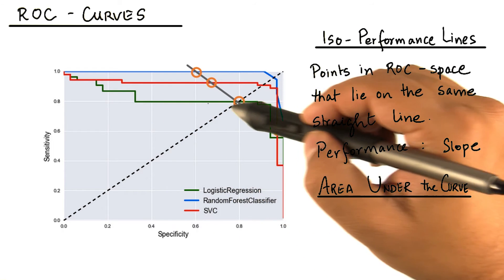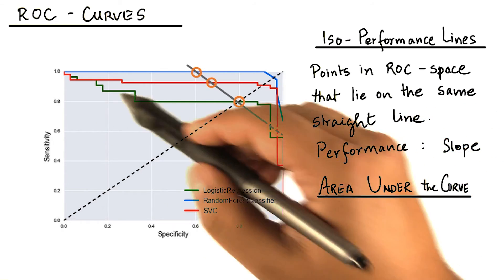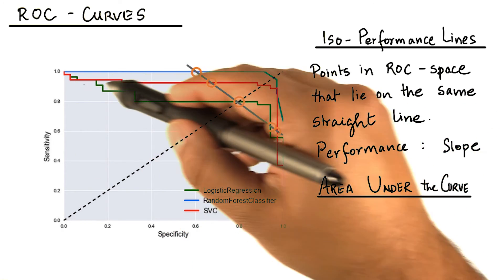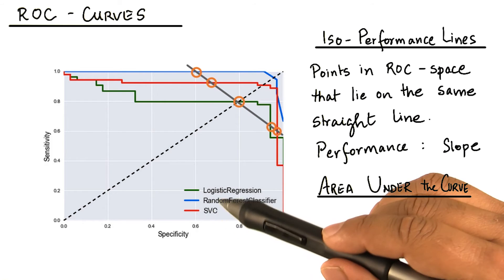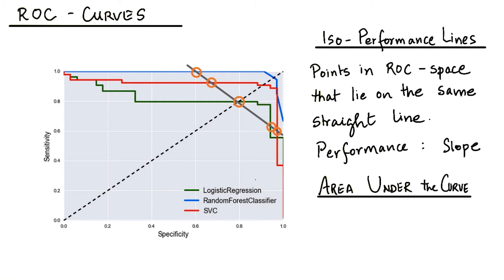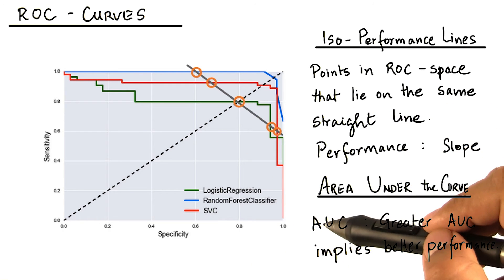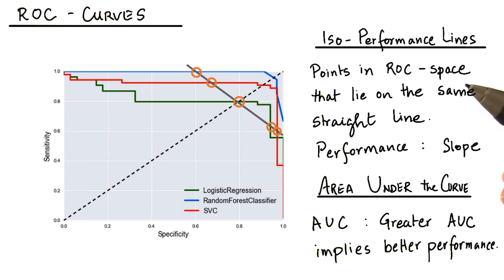In our case here, you see the green line has a lesser area than the red line under it. Thus, the SVC performs better than the logistic regression. Since a greater AUC, or area under the curve, implies better performance. In our case, we choose the random forest classifier as it performs best on average, given the area under the curve is the greatest.